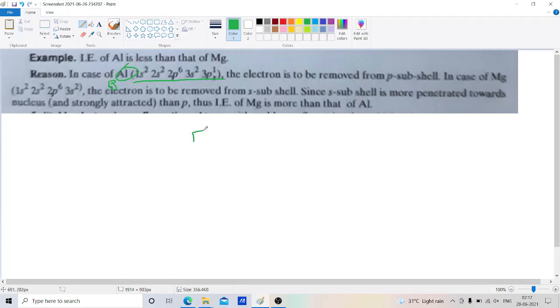We know p has 3 subshells: px, py, and pz. In aluminum, the electron is present in the px subshell. The electron is to be removed from the p subshell.